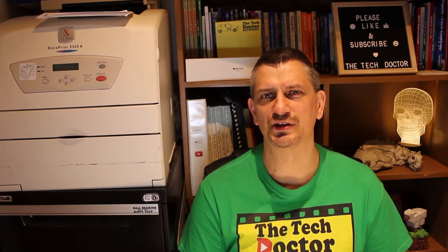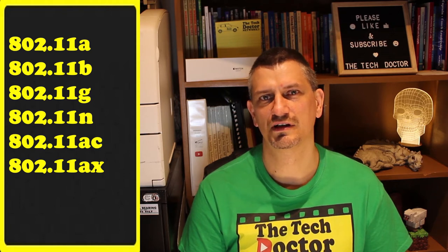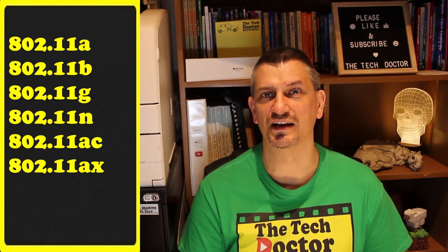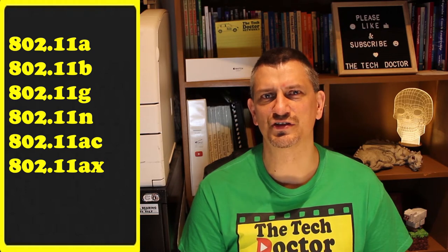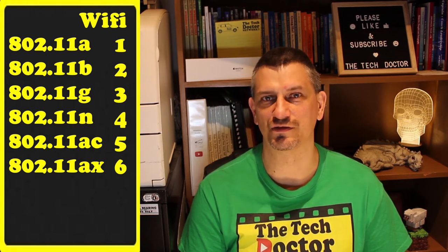The releases were named A, B, G, N, AC, and AX. Because of the confusion this has led to, they've now been retrospectively renamed Wi-Fi 1 through to Wi-Fi 6. Much more useful and user-friendly.